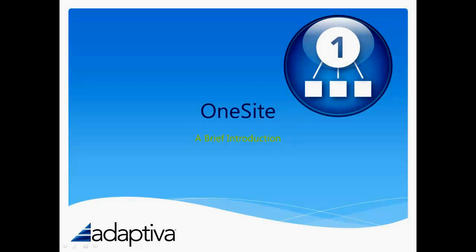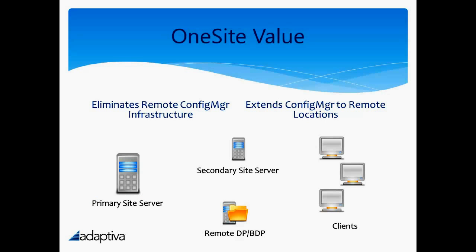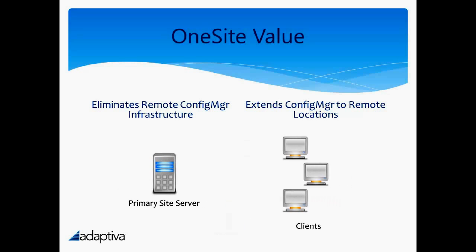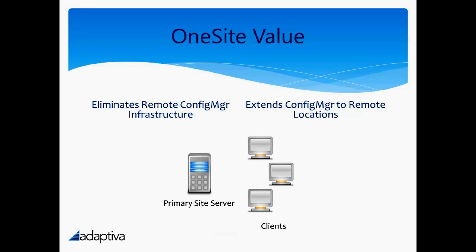Adaptiva OneSite is a brief introduction. OneSite eliminates costly remote infrastructure in System Center Configuration Manager, as well as extends Config Manager to locations where you do not or cannot have remote infrastructure. OneSite does this by removing the requirement for secondary sites, distribution points, and branch distribution points, and replaces them with a robust peer-to-peer technology. This effectively gets rid of the middle tier from a Config Manager hierarchy, which significantly reduces capital expenses and ongoing maintenance expenses.